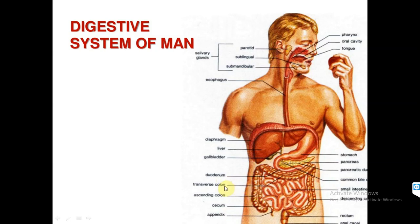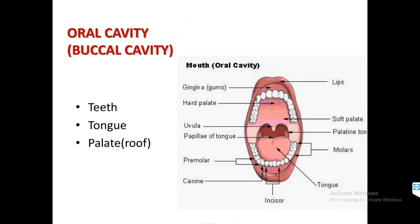On the basis of position, the colon can be divided into ascending, descending, and transverse. All the structures of small and large intestine will be discussed later. First and foremost, the alimentary canal starts from the oral cavity or buccal cavity.